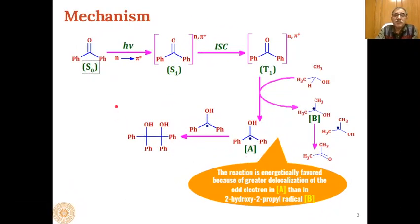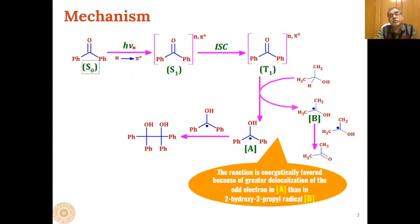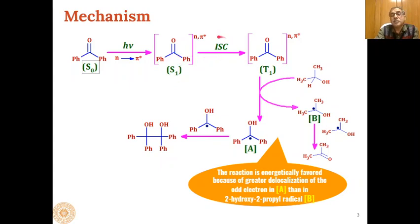As far as the mechanism of this reaction is concerned, benzophenone or any diaryl ketone in the ground state — the S0 state — when irradiated in the presence of UV light, undergoes n→π* transition and goes to the higher first excited singlet state, the S1 state.